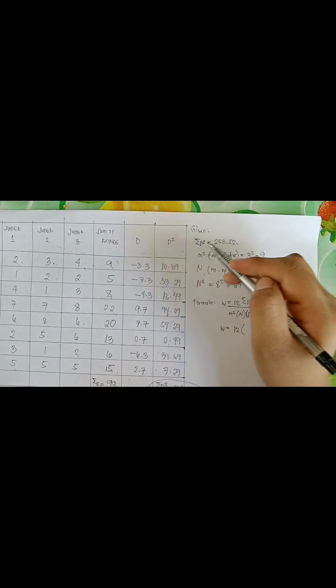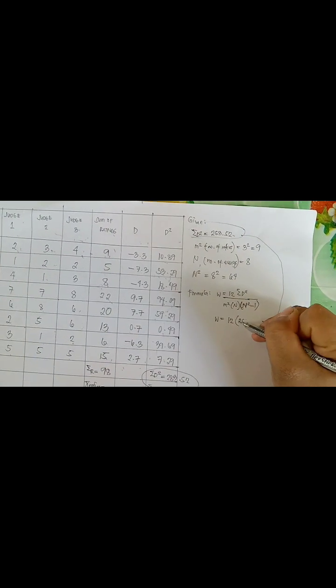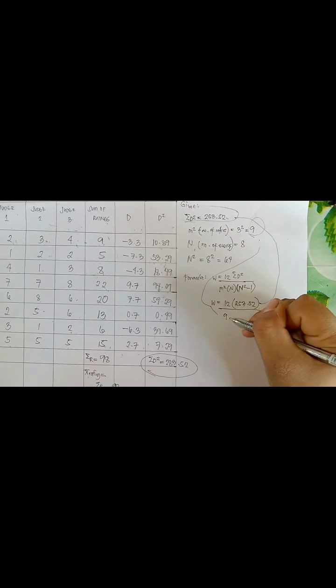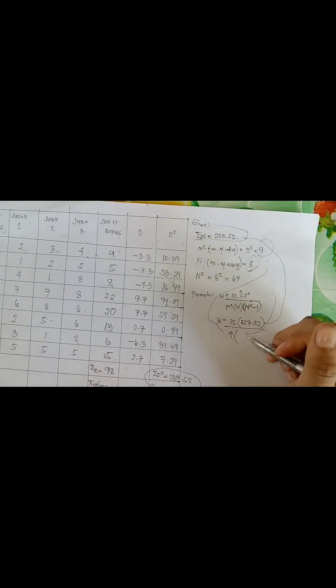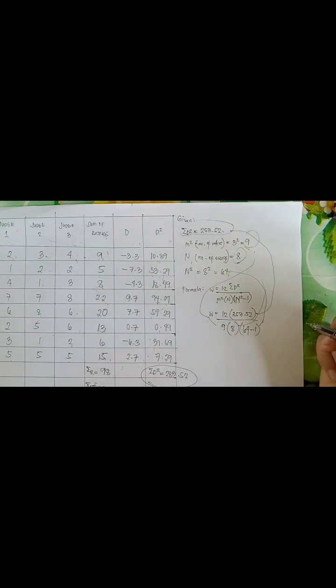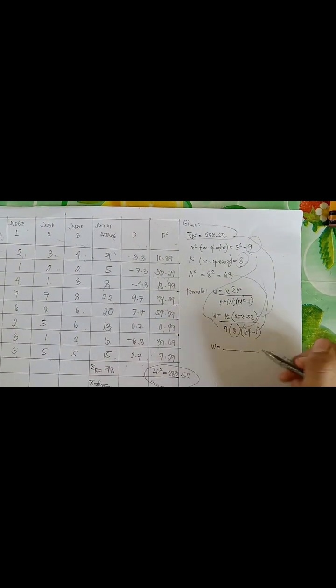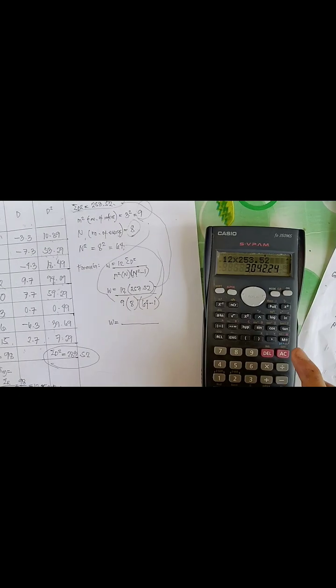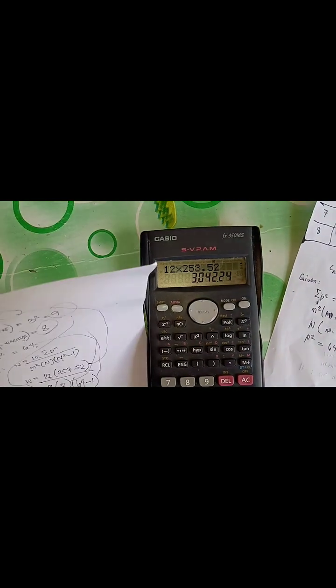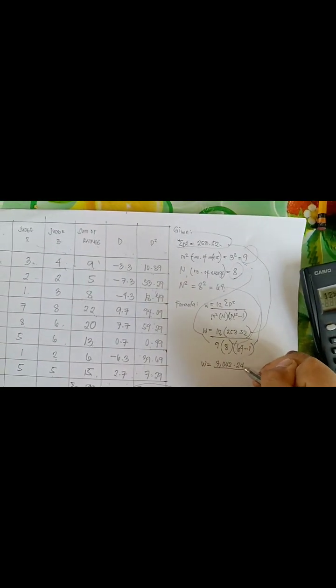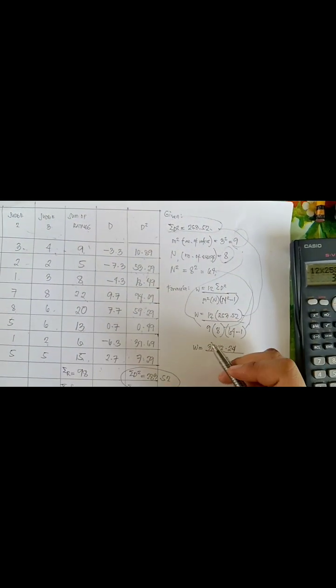Nine times N, number of essays, eight. And then N squared which is 64. 64 minus one. Now we have W is equal to, we are going to multiply 12 times 253.52 is equal to 3,142.24.